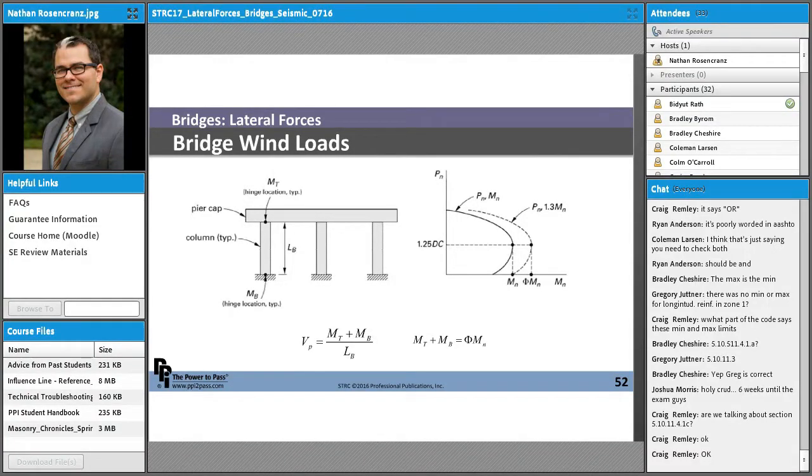All right, so here's a little example showing what's going on here. So here we have our pier cap and we have our columns. This is a three column pier.